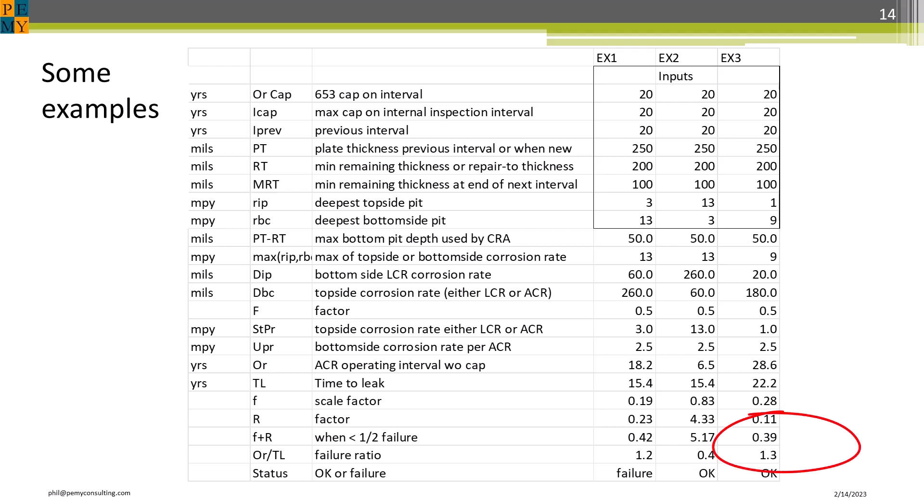In example 3, even though F plus R is 0.39, and the failure ratio is greater than 1, no failure is indicated. This is because the 20-year cap in the CRA method calls for an internal inspection, and the time to leak exceeds 20 years.